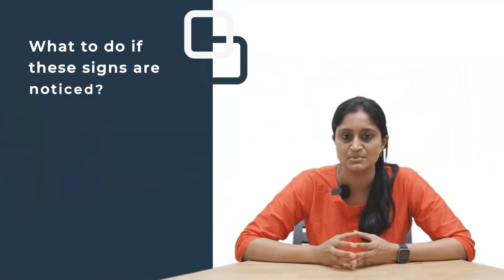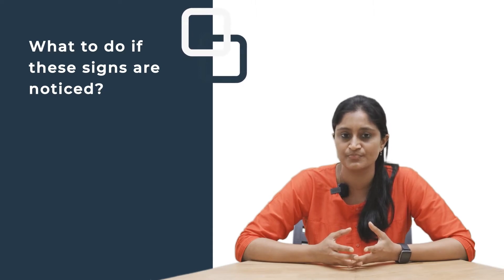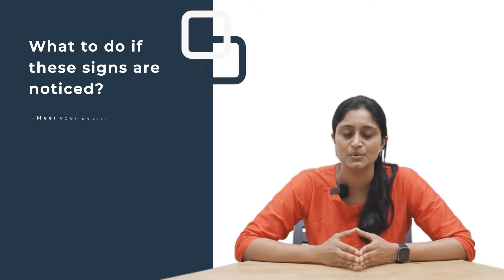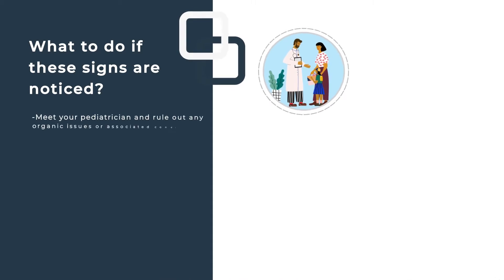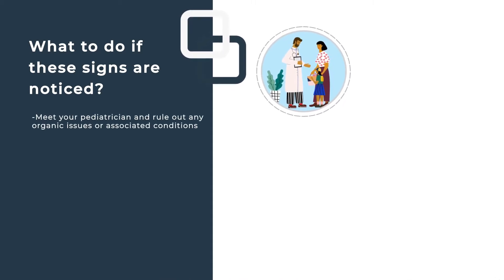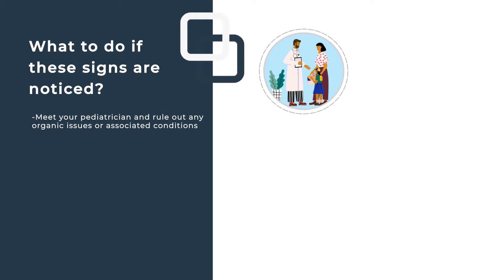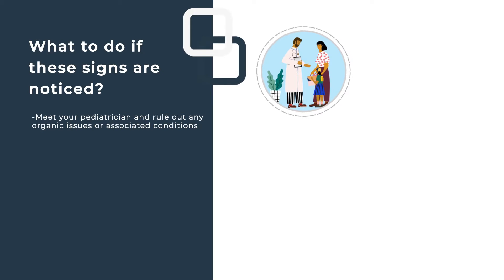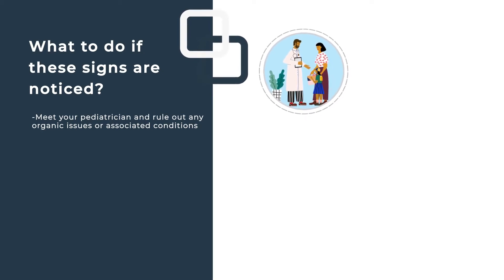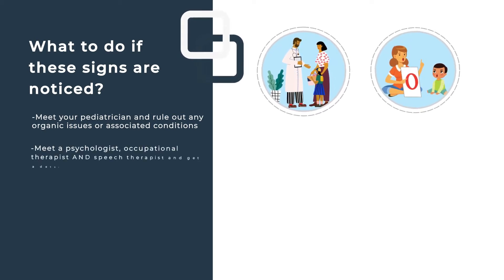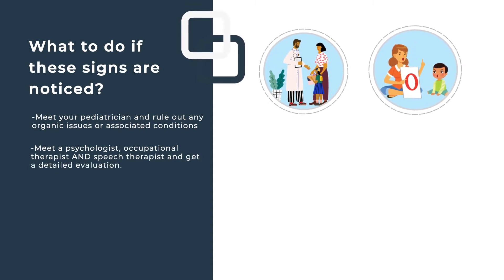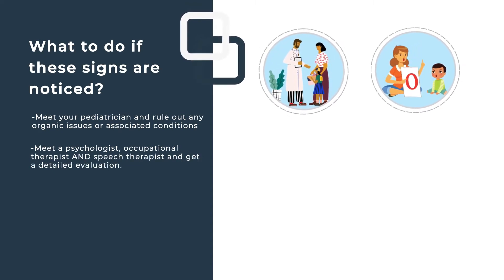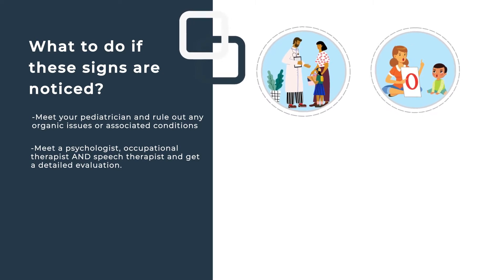If you notice any of these symptoms, the first point of contact is your pediatrician to rule out any organic issues. They may ask for a hearing or eye test, genetic tests to rule out Fragile X or Rett syndrome, and checks for recurrent strep infections that might mask as ASD. Once organic issues are ruled out, you'll be referred to a group of allied health professionals — a psychologist, an occupational therapist, and a speech therapist.